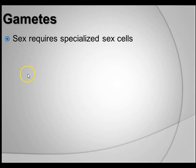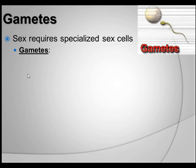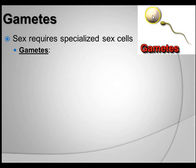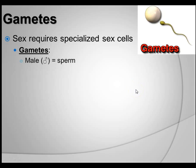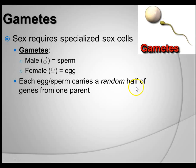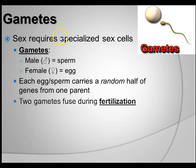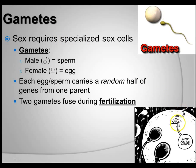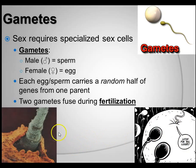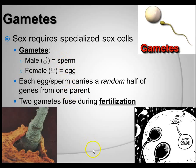Let's talk about gametes. Gametes are sex cells — sexual reproduction requires special sex cells called gametes. There are two types of gametes: the egg and the sperm. Males have the sperm, females have the egg. Each egg and sperm carries a random half of genes from one parent. Those two gametes are fused during fertilization — the sperm fertilizes the egg and it becomes a zygote. That electron microscope image shows sperm burrowing into the egg for fertilization. Gametes are the sperm and the eggs.